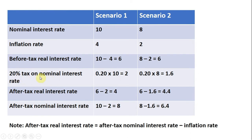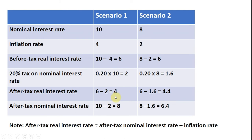All we're going to do is take 20% of 10. Taxes are based on nominal gains, so 0.2 times 10 gives us the tax running at 2%. For the after-tax real interest rate, we take the before-tax real interest rate of 6 and subtract from it this 2, leaving us with an after-tax real interest rate of 4%.